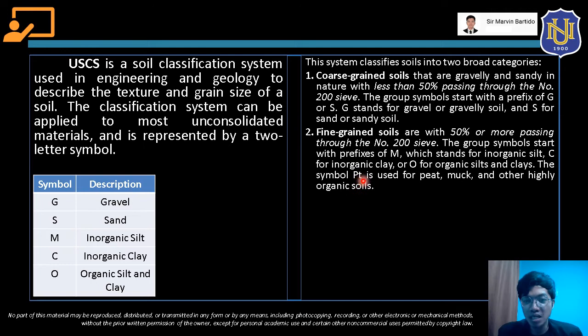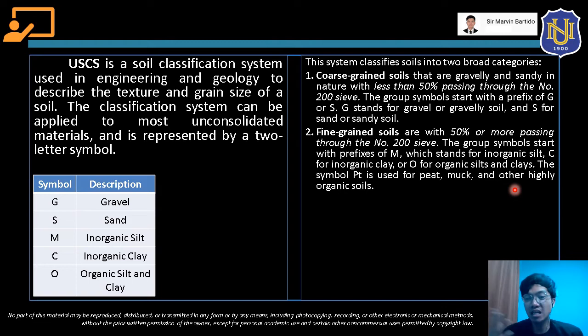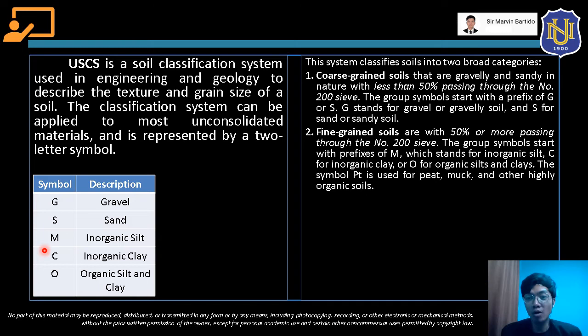In the USCS table, there is also the symbol PT for peat, muck, and other highly organic soils. Like organic silt and clay, these are weaker and less compressible than inorganic materials. These are the first-letter symbols — they depend on the major constituent of the soil. The second letter symbols are: W for well-graded, P for poorly graded, L for low plasticity, and H for high plasticity.